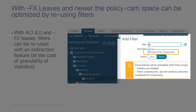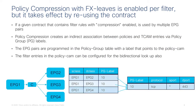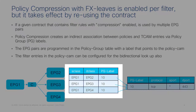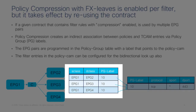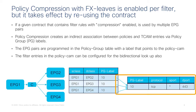Enable policy compression was introduced in 4.0. It works for FX leaves or newer, and this option is not just for the contract reuse feature — it also enables bidirectional optimizations. It's the same option introduced to allow ACI to do everything it can to compress entries. The option is enabled per filter. The new optimization introduced with the FX leaf uses a policy group table to store EPG-to-EPG pairs and a label. If multiple EPG pairs use the same set of filters, they point to the same entry in the policy cam.